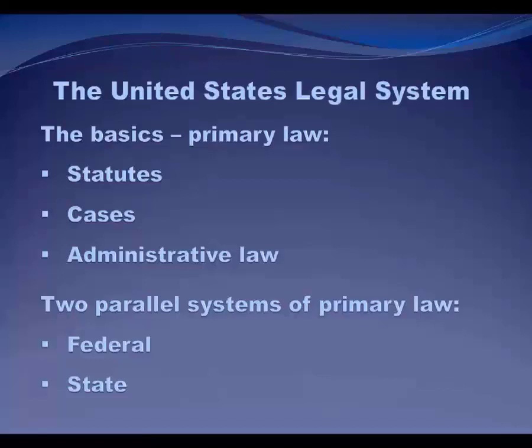Let's talk about primary law. Here is a very brief overview of the US legal system — fortunately, you already know most of this. You must have a basic understanding of the US legal system before you can attempt to find a specific law to answer a specific legal question. The federal government is divided into three branches, and each branch creates law that we must be concerned with as legal researchers. The legislative branch or Congress creates statutes. The judicial branch, including the Supreme Court, issues opinions — this body is called case law. The executive branch and its agencies create regulations and other administrative determinations — this body of law is called administrative law.